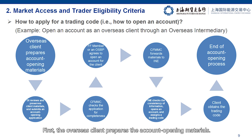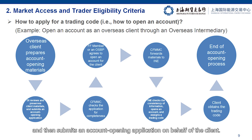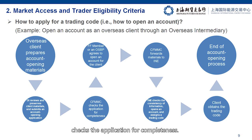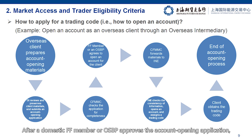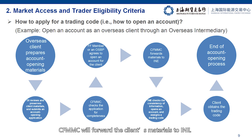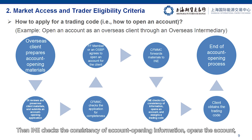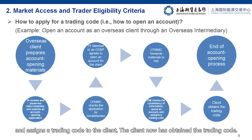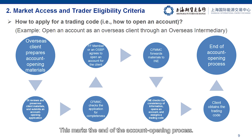First, the overseas client prepares the account opening materials. The overseas intermediary reviews them and keeps the documents on record, and then submits an account opening application on behalf of the client. Then the China Futures Market Monitoring Center, or CFMMC, tracks the application for completeness. After the domestic FF member or OSBP approves the account opening application, CFMMC will forward the client's materials to INE. Then INE tracks the consistency of account opening information, opens the account, and assigns a trading code to the client. The client now has obtained the trading code, marking the end of the account opening process.